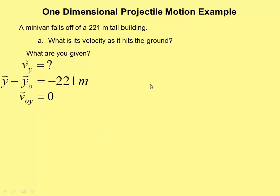And the other thing is that this is going to be a problem of one-dimensional projectile motion. In other words, we are assuming free fall. We are assuming that gravity is the only thing acting on the minivan, so we're neglecting any air resistance effects.